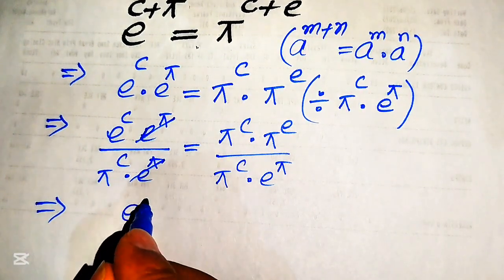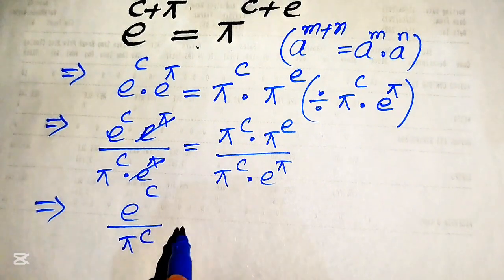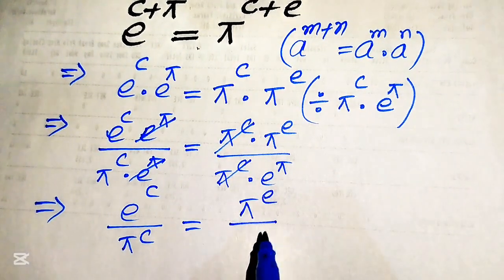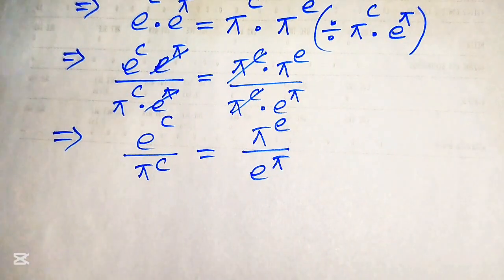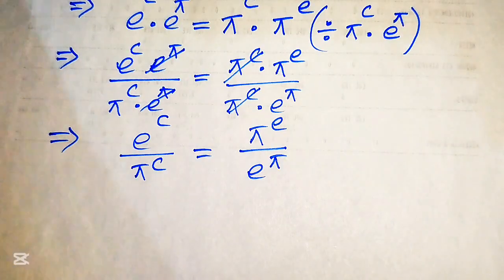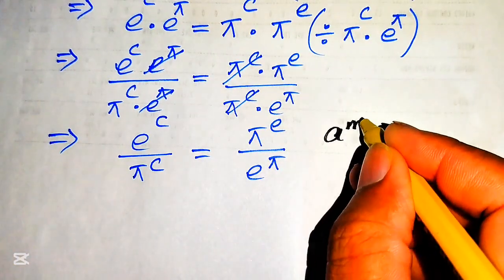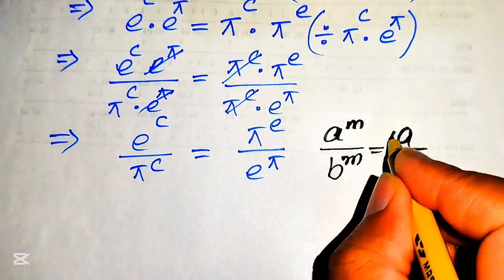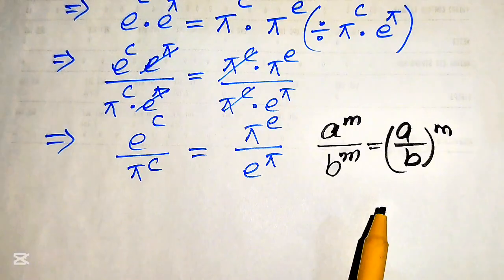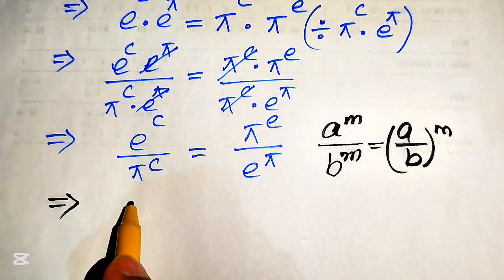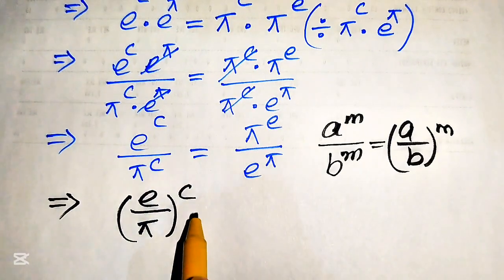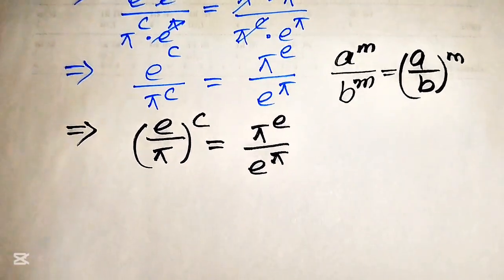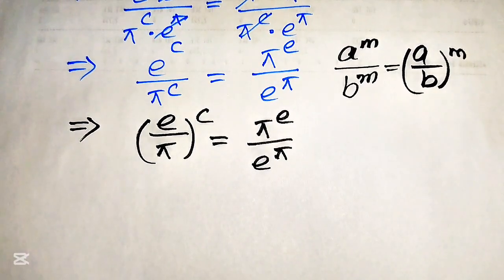Now, e to the power of pi cancels on the left, and pi to the power of c cancels on the right. We get e to the power of c divided by pi to the power of c equals pi to the power of e divided by e to the power of pi. We then apply the exponent law: a to the power of m divided by b to the power of m equals (a over b) to the power of m. So the left-hand side becomes (e over pi) to the power of c.